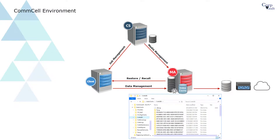Each new Index will generate a new subfolder under the Index Cache. A copy of the Index is also written to the storage media. If a browse or a restore operation cannot locate the Index in the Index Cache, it will be automatically retrieved from the storage media. The Index remains in the Cache until it exceeds the user-defined retention criteria or the disk usage limits configured through the Media Agent are reached.